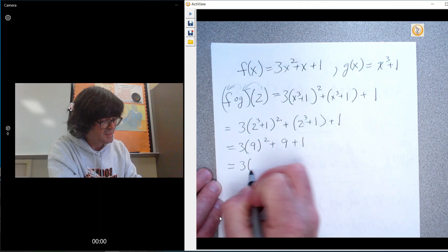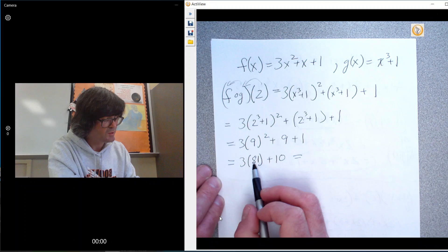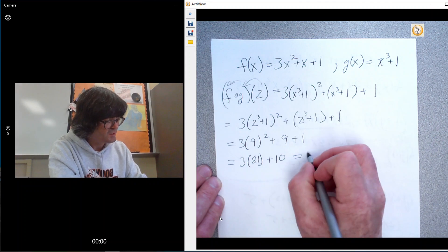And finally, that's 3 times 81 and then plus 10. 81 there. So 243 plus 10 is 253.